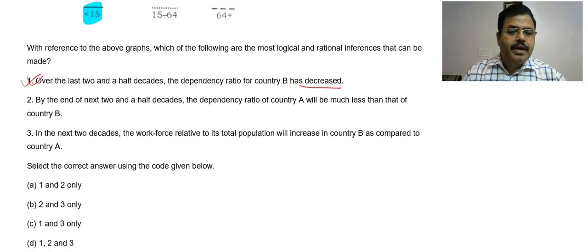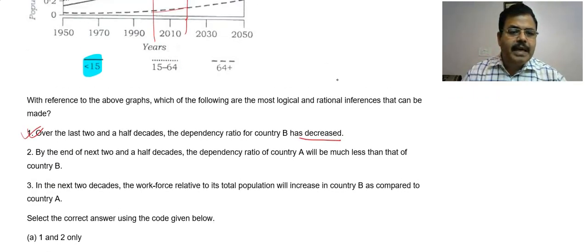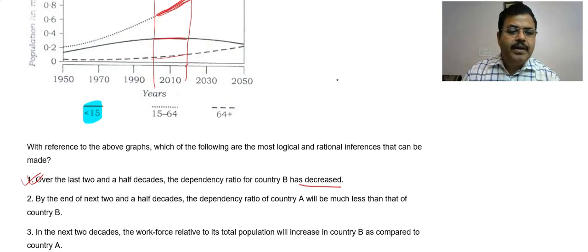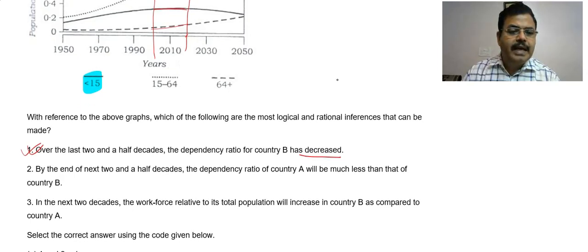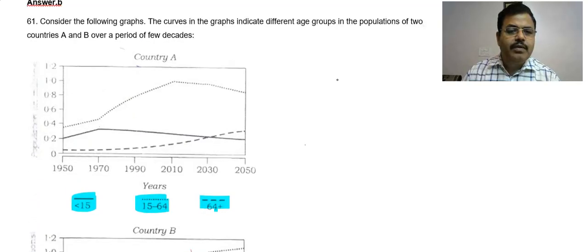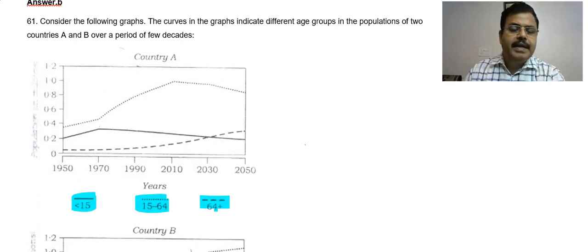Now the second option: by the end of two and a half decades, the dependency ratio of country A will be much less than that of B. Let's analyze this. By the next two and a half decades, the dependency ratio of A compared to B — here this is going to be about 20 to 25 years from now.